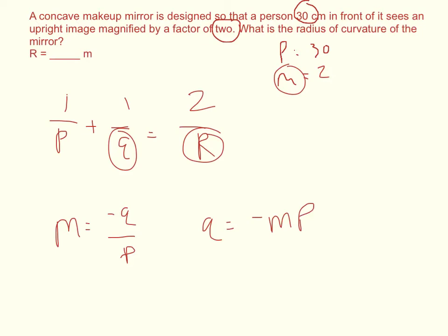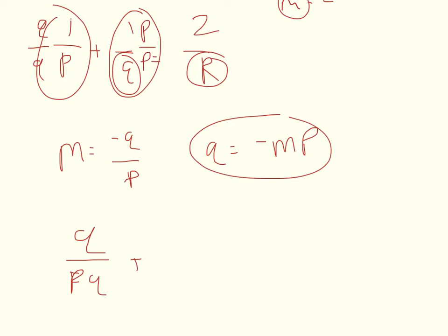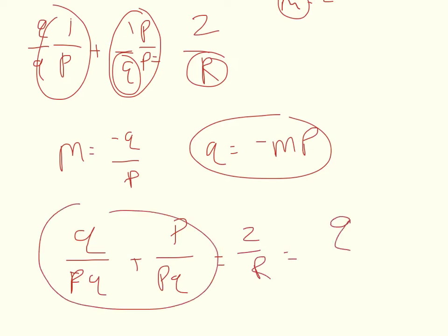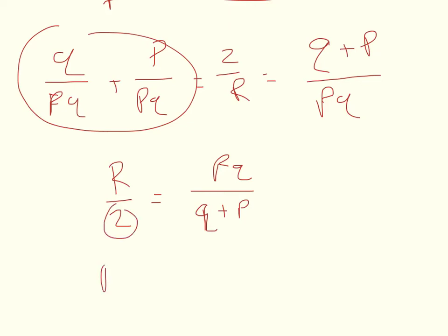I'll go ahead and solve for R before plugging in the substitution. Finding a common denominator, I multiply the first term by Q over Q to get Q over PQ, and multiply the second term by P over P to get P over PQ. That gives 2 over R equals Q plus P over PQ. Taking the inverse of both sides gives R over 2 equals PQ over Q plus P, and multiplying both sides by 2 gives R equals 2PQ over P plus Q.